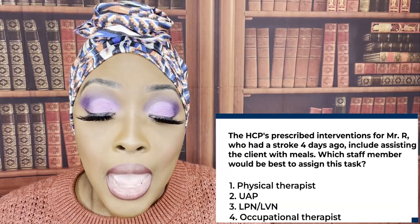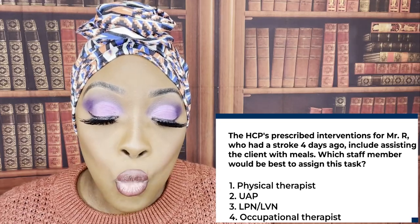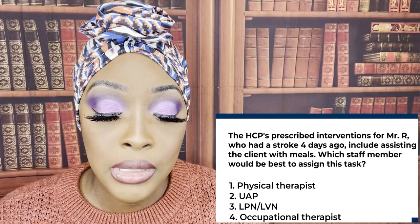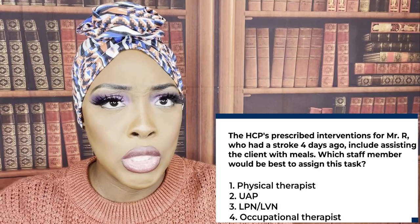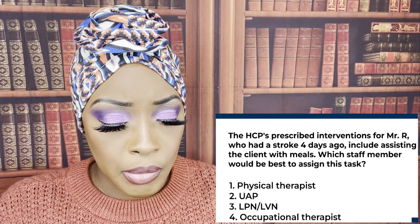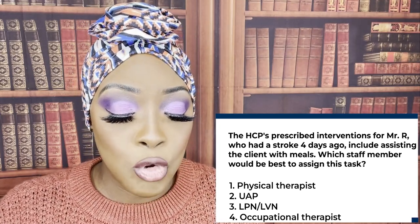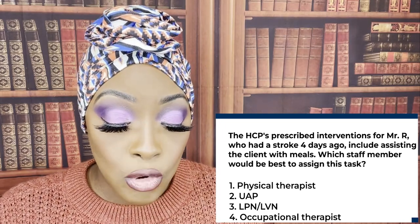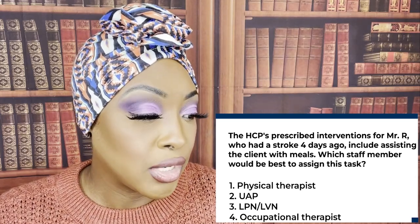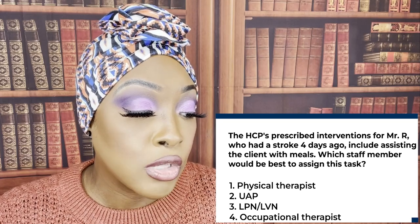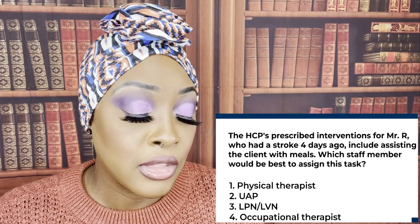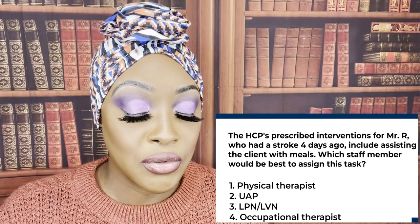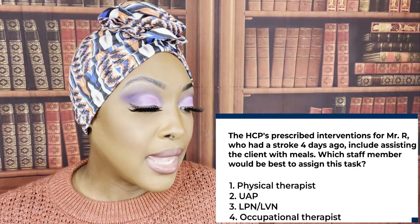Moving on. The healthcare provider prescribed interventions for Mr. R, who had a stroke four days ago, include assisting the client with meals. Which staff member would be best to assign this task — the physical therapist, a UAP, an LPN/LVN, or an occupational therapist? Mr. R is a 75-year-old man who had a left hemisphere stroke four days ago. The correct answer is the UAP.